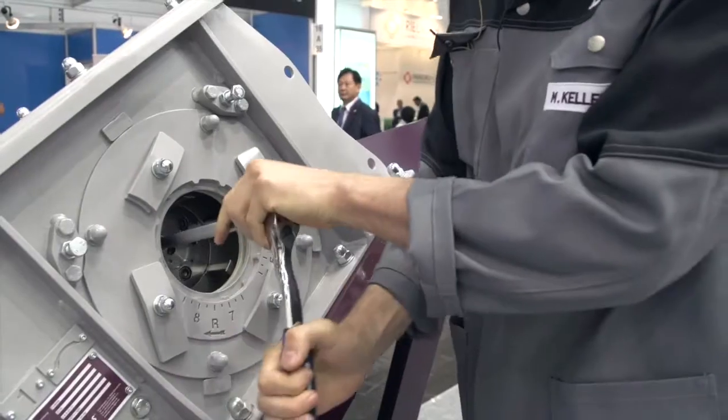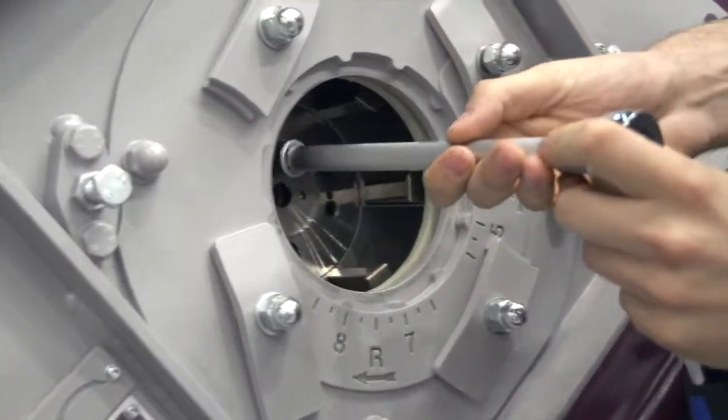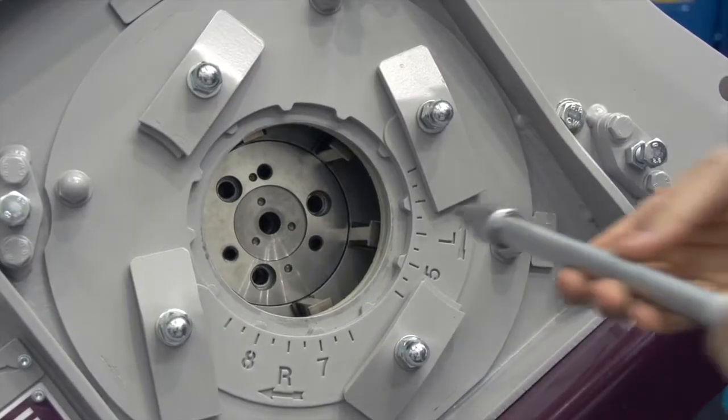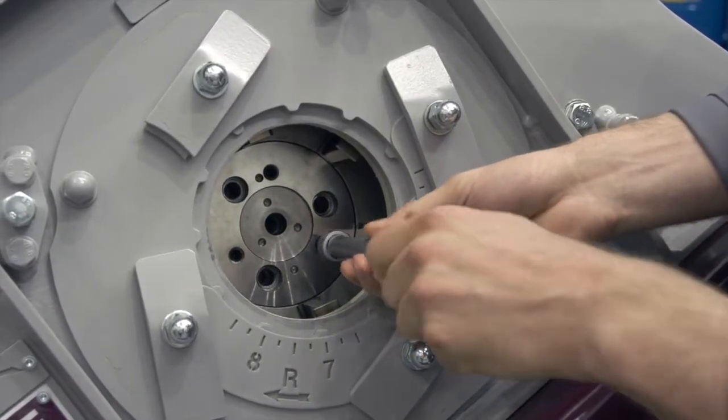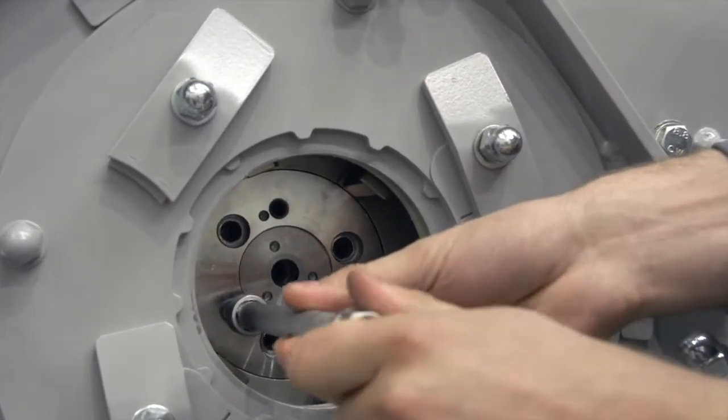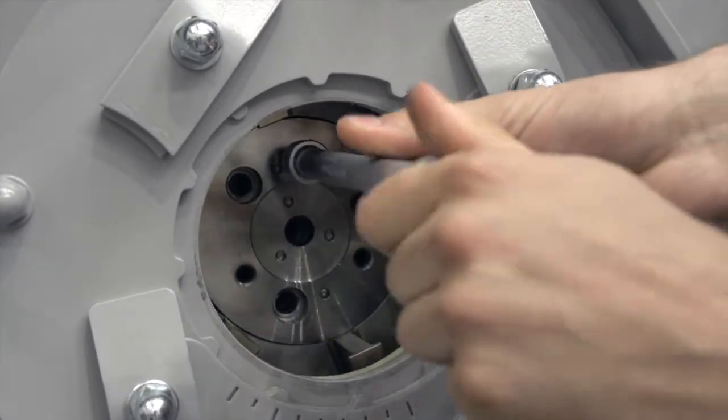Then remove the clamping disc. It holds the throwing blades in place. To this end, three screws must be loosened. Since the clamping disc may also have become stuck, the headless screws can be used once again for loosening it. In this case, however, the headless screws must be screwed in instead of out.